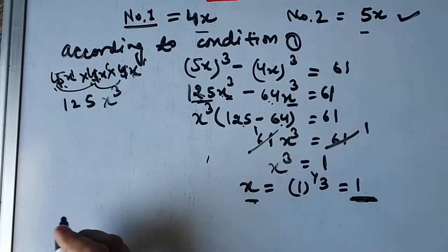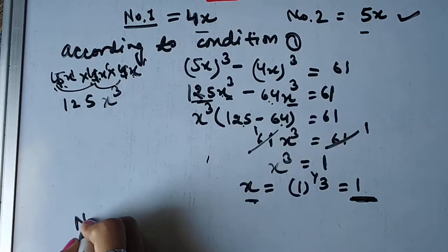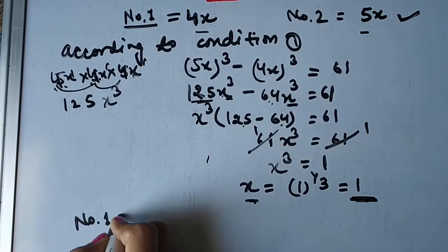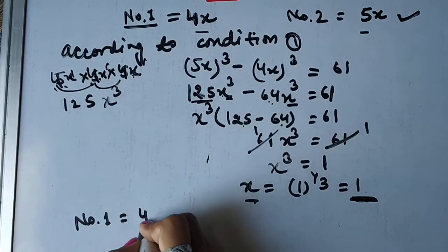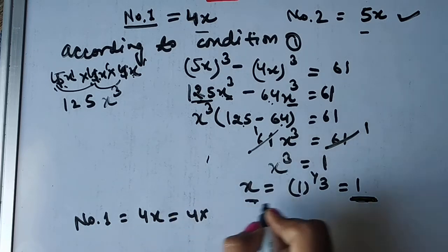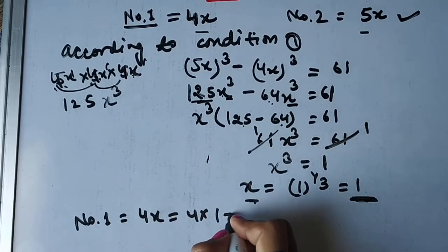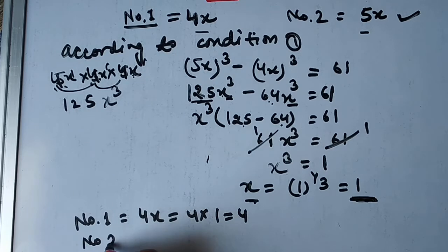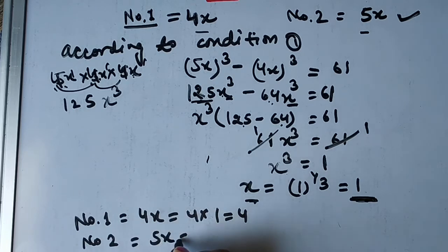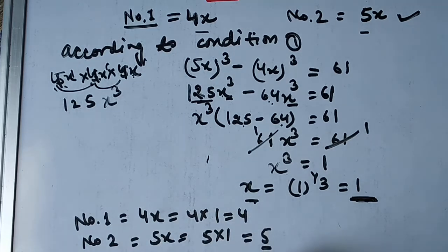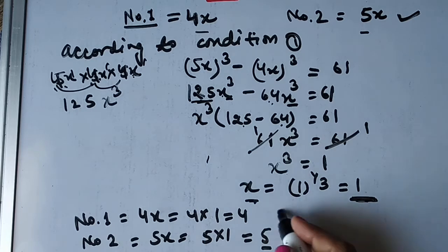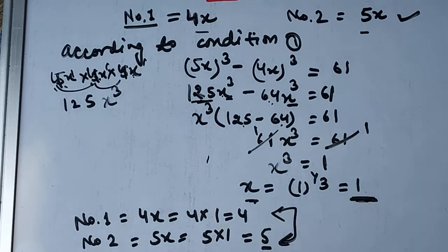x = 1 hai toh number 1 aur number 2 mein value put kar dete hain. Number 1 = 4x = 4 × 1 = 4. Number 2 = 5x = 5 × 1 = 5. Toh dono numbers aa gaye: 4 aur 5. Done.